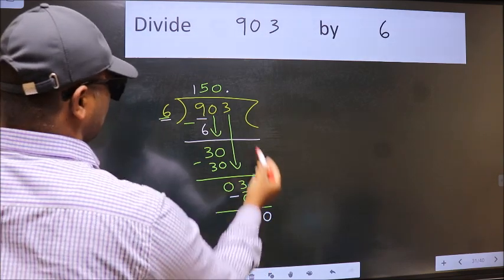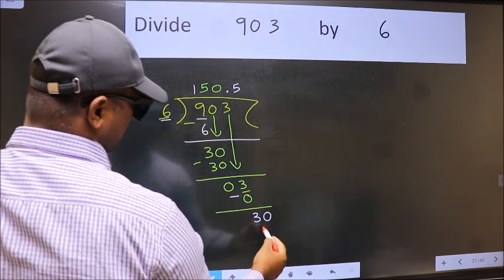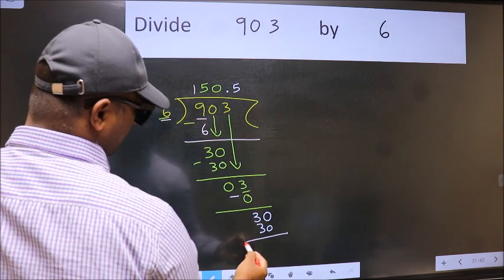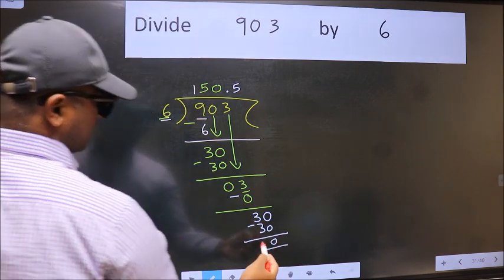When do we get 30 in 6 table? 6×5 is 30. Now we subtract. We get 0.